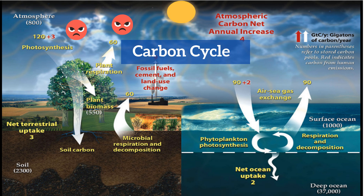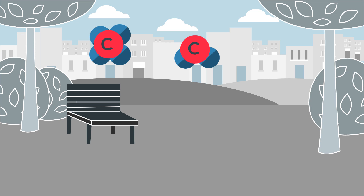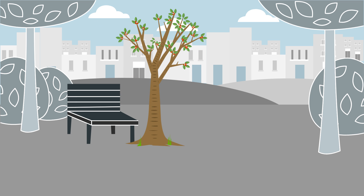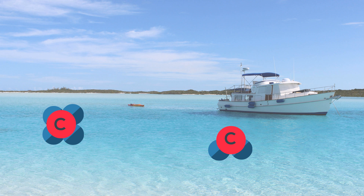Carbon is found in the atmosphere in at least two forms: carbon dioxide and methane. This atmospheric carbon can be absorbed by autotrophs like plants and plankton to be used for photosynthesis. It can also be absorbed by bodies of water and the ocean.